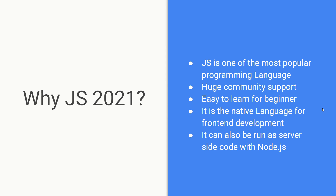It has huge community support — you will find a lot of resources, YouTube videos, articles. JavaScript developers tend to be very helpful with each other. It's also a very easy language to learn compared to others for beginners. JavaScript is the native language for front-end development, so all browsers run JavaScript natively. Google Chrome and Mozilla Firefox have their own JavaScript engines — Chrome uses the V8 engine and Firefox uses SpiderMonkey.